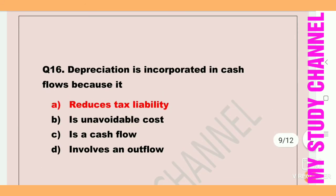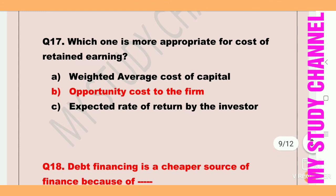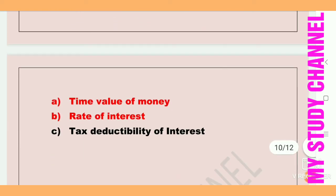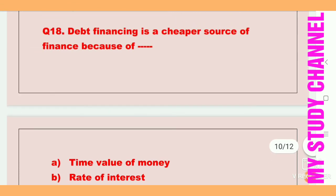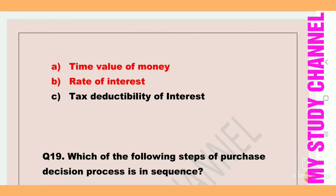Question 16: depreciation is incorporated in cash flows because — the answer is it reduces tax liability. Next question: which is more appropriate for cost of retained earnings? Option B is the right answer — opportunity cost to the firm. Next question: debt financing is a cheaper source of finance because of tax deductibility of interest — this statement is the right answer.